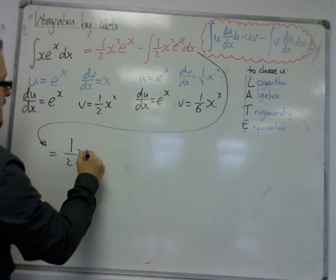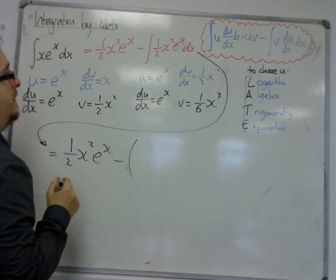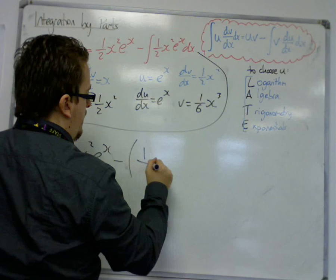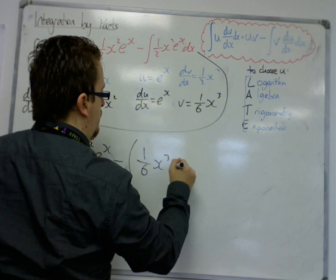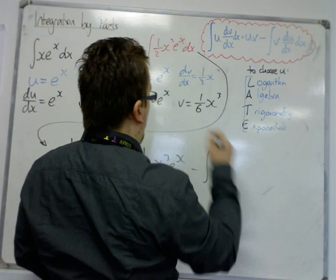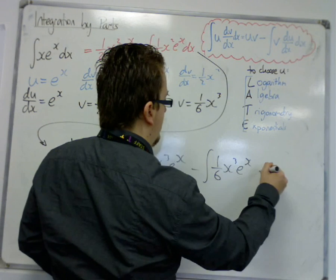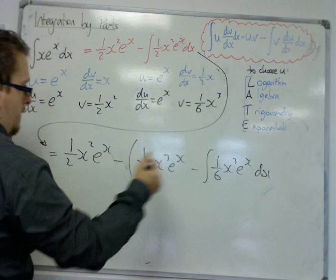So the next line of this integral, that first bit remains the same. Take away, open bracket, u times v, so that's one sixth x cubed e to the x. Take away the integral of one sixth x cubed e to the x dx. Close the bracket.